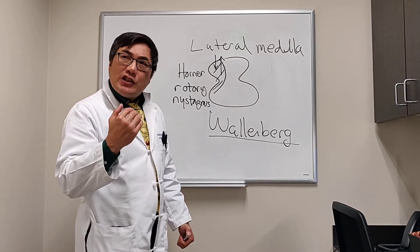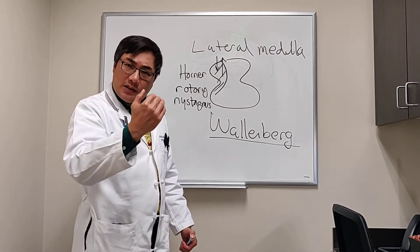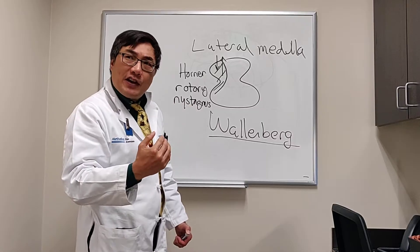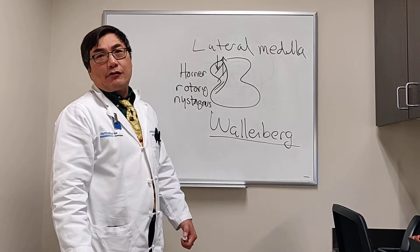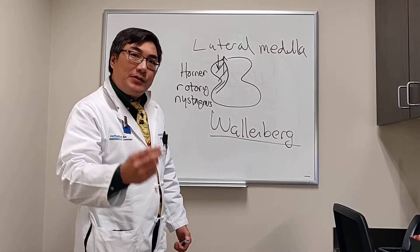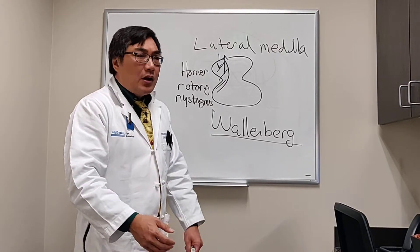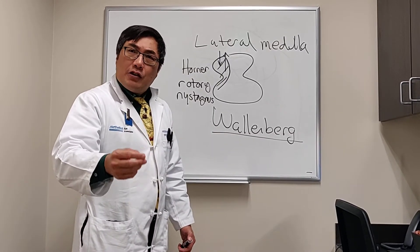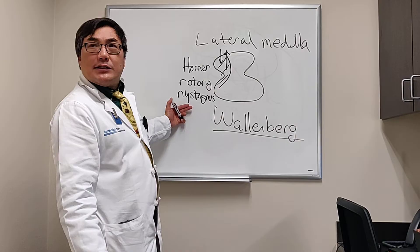Information from the cerebellum has to transmit to the brain stem and vice versa. Those afferent and efferent fibers can be disrupted in the lateral medulla, producing symptoms of gait ataxia, nausea, vomiting, vertigo, dizziness, and rotary nystagmus.